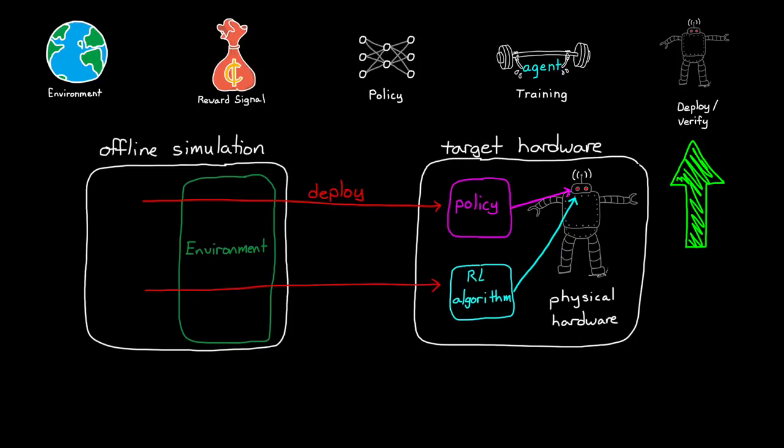However, we also have the ability to deploy the reinforcement learning algorithms along with the policy and can continue learning on the target with the actual environment. And this is important for environments that are hard to model accurately, or that are slowly changing over time, and therefore the agent needs to continue to learn occasionally so that it can adjust to those changes.